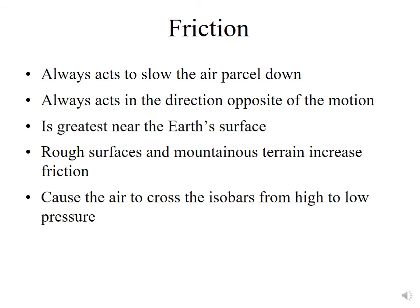Friction opposes motion, always acting to slow down the air parcel in the opposite direction of movement. It is greatest near the Earth's surface because of roughness elements like trees, buildings, and vegetation. Rough surfaces and mountainous terrain have the greatest friction. The net impact of friction is that it causes air to cross the isobars from high to low pressure.